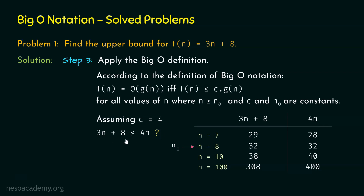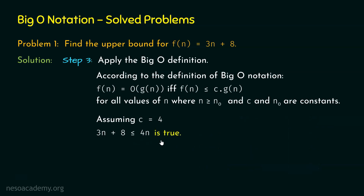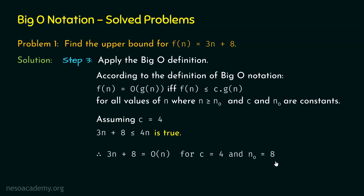We can say that 3n + 8 ≤ 4n is true, and therefore 3n + 8 = O(n), since g(n) is n. This holds for c = 4 and n₀ = 8. With this problem, it is clear how to find the upper bound for a specific function. Now let's proceed with problem number 2.